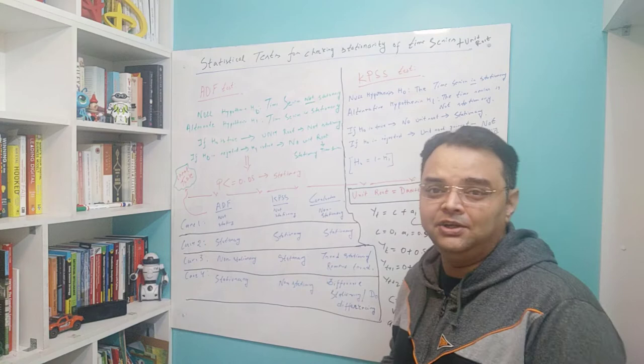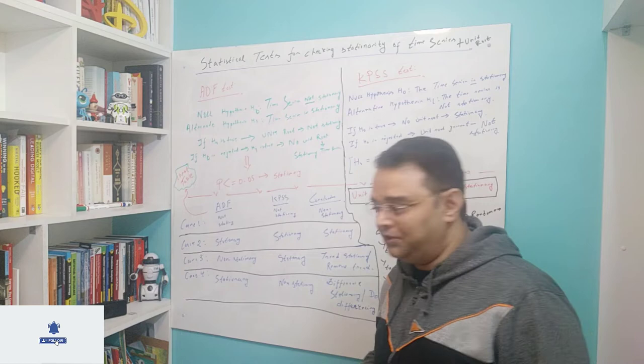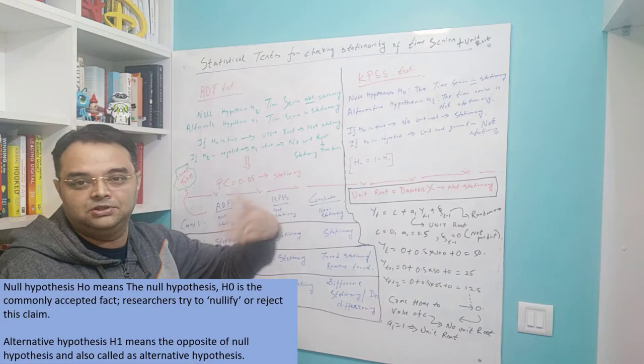In the previous video we saw that stationarity of data — at times you can observe and conclude — but most of the time you need something more than exploratory data analysis. That's the reason fortunately we have two tests: the ADF and the KPSS test.